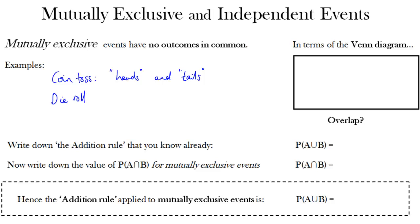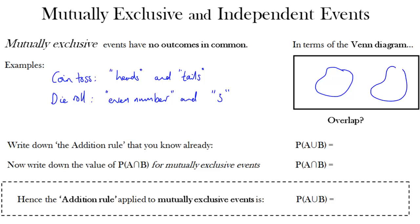These are events that have no outcomes in common. So for example, if you roll a dice, you can't get an even number and get a three, so those events are deemed mutually exclusive. Now look at this Venn diagram — there's no overlap between the two events, because you can't have both of them occurring.